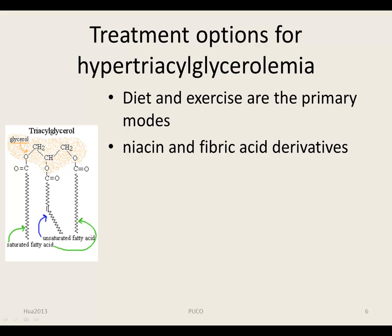Elevated triglycerides and low HDL levels are independently associated with increased risk of coronary heart disease. Diet and exercise are the primary modes of treating hypertriglyceridemia. If indicated, niacin and fibric acid derivatives are most efficacious in lowering triacylglycerol levels. Triglyceride reduction is a secondary benefit of statin drugs, the primary benefit being LDL cholesterol reduction.